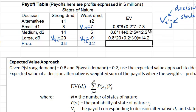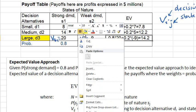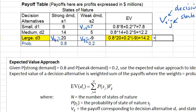Here are the three expected values for the three alternatives, and the highest one is 14.2. The highest expected value can be achieved by building the large condominium complex. So based on the expected value approach, we would want to build a large condominium complex — this is our best decision. This would be considered the maximum expected value of this problem.